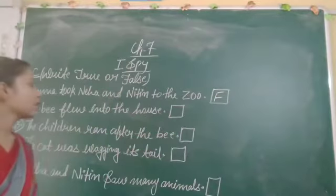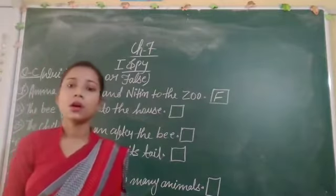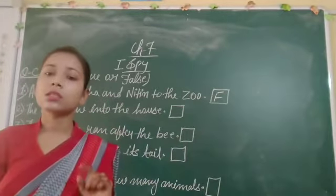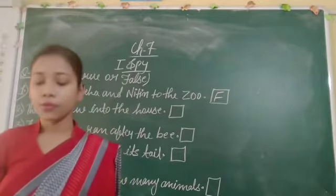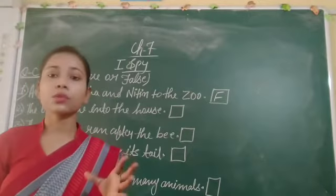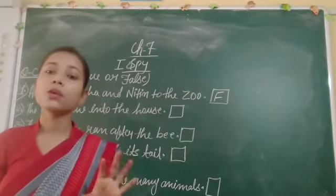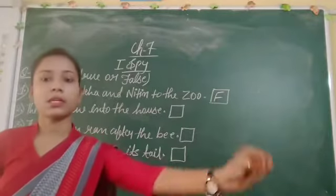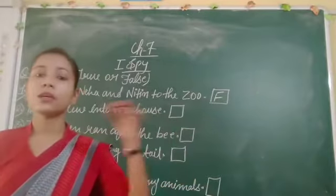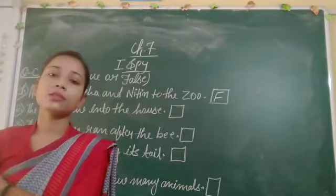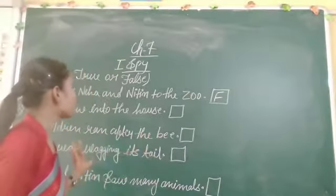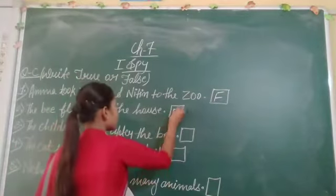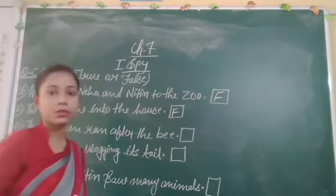The bee flew into the house. Madhu makhi burkar ghar mein chali kai. This is also a false statement. If you know the story, the bee flew out of the house into the garden — it did not come into the house. So the answer for number two is false. The bee flew into the garden, not into the house.